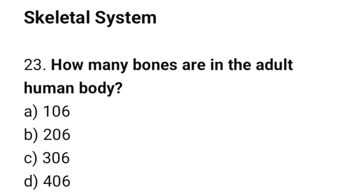Question number 23: How many bones are in the adult human body? The correct answer is B: 206.